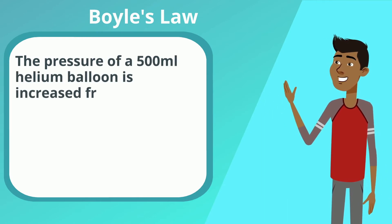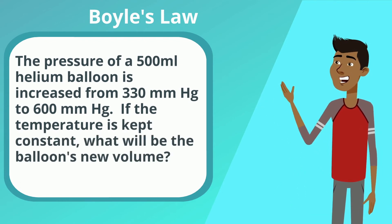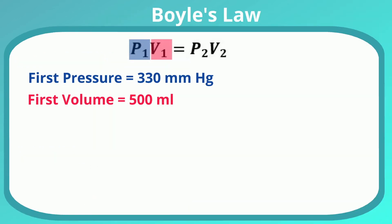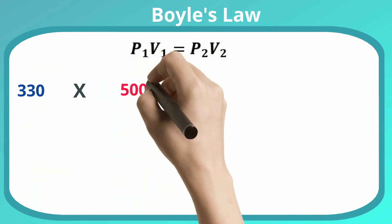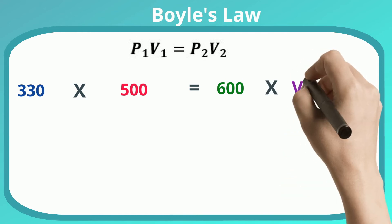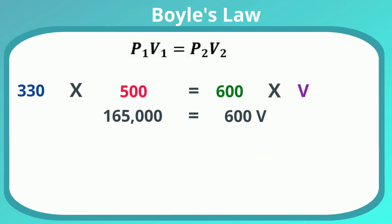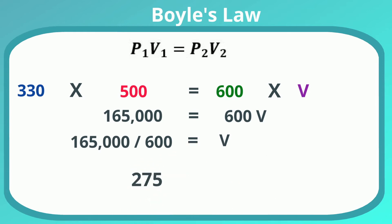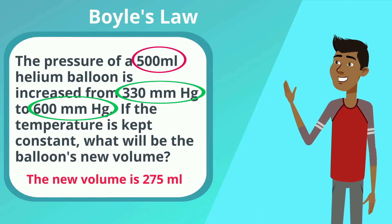For Boyle's Law: the pressure of a 500 mL helium balloon is increased from 330 to 600. If the temperature is kept constant, what will the balloon's new volume be? The first pressure is 330, the first volume is 500, the second pressure is 600, and the second volume we don't know. So 330 times 500 equals 600 times V. That gives us 165,000 equals 600 times V. Divide both sides by 600, and V equals 275. So the new volume is 275 milliliters.